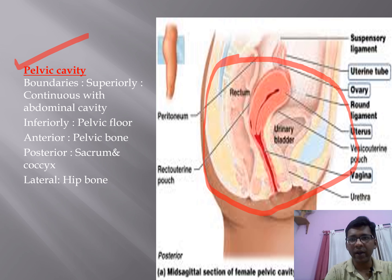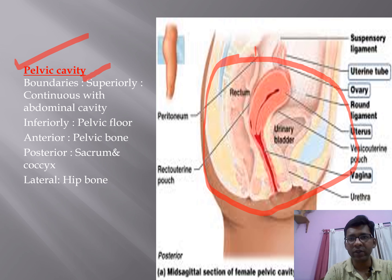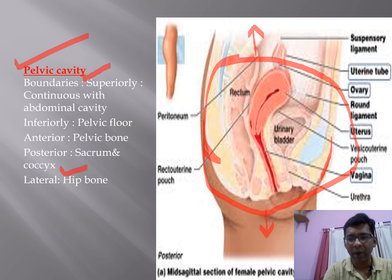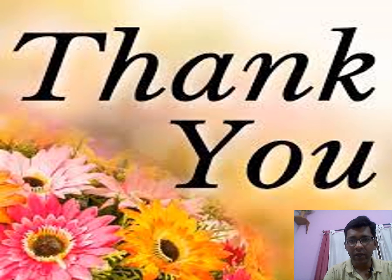The pelvic cavity contains vital genital and urinary organs. Its boundaries are: superiorly continuous with the abdominal cavity, inferiorly with the pelvic floor, anteriorly with the pelvic bone, posteriorly with the sacrum and coccyx, and laterally with the hip bone. Thank you friends, we will meet in the next lecture. If you are liking the lecture, kindly like and subscribe our channel.